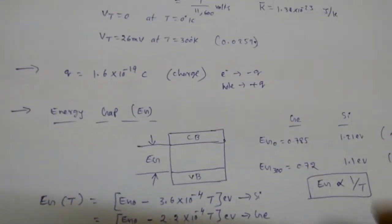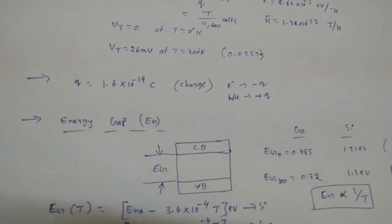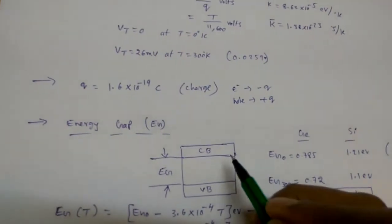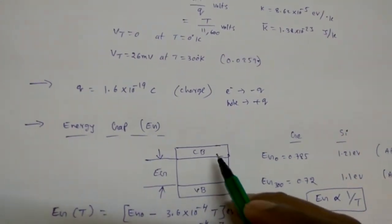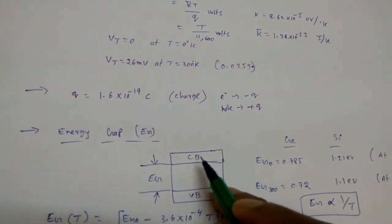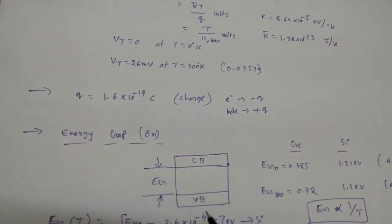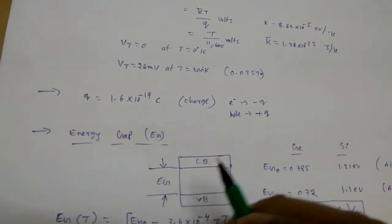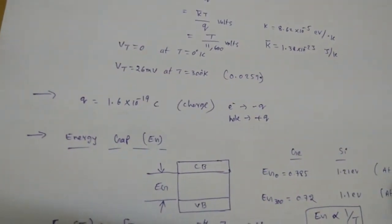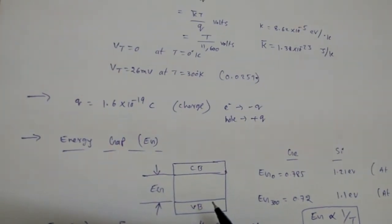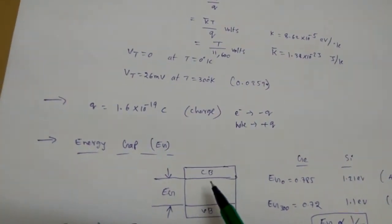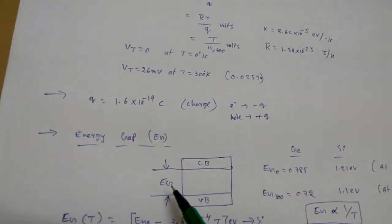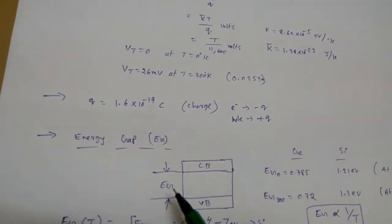The next concept is energy gap. For any semiconductor, metal, or insulator there is a conduction band and a valence band. When electrons are in the conduction band, current can flow; the valence band is generally filled with holes. The gap between the conduction band and valence band is called the energy gap. If this energy gap is very high, conduction is not possible.